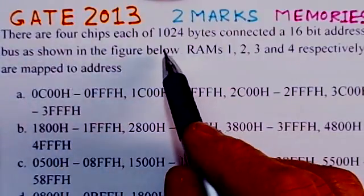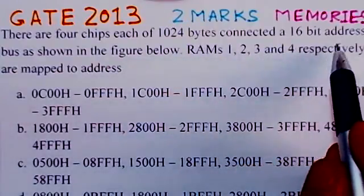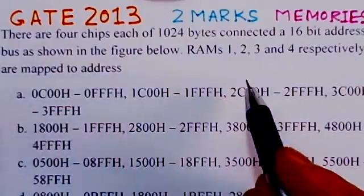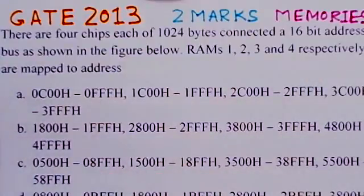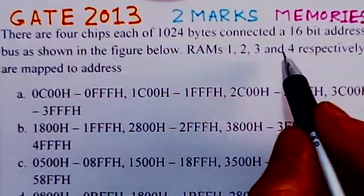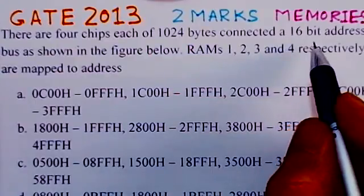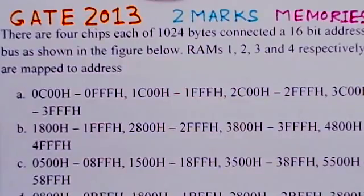There are four chips, each of 1024 bytes, connected to a 16-bit address bus as shown in the figure below. RAM 1, 2, 3, and 4 respectively are mapped to addresses. Actually, there are four RAM chips and they are connected to a 16-bit address bus, and we have to find out what are the corresponding address assignments to these RAM chips.